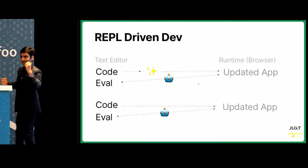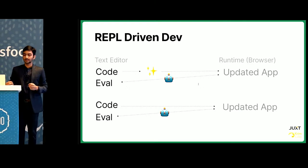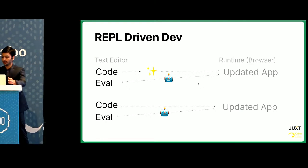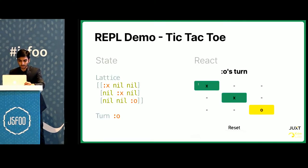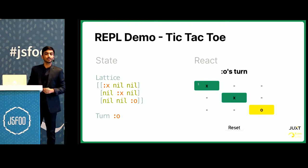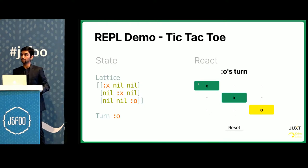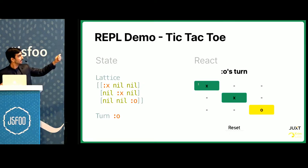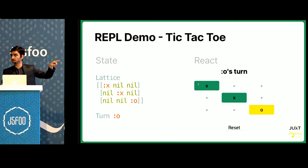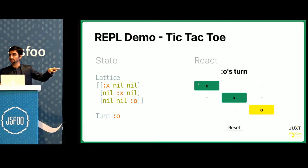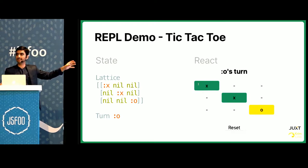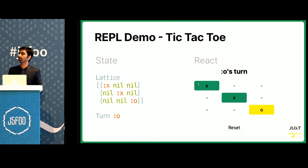A demo can explain this better than my words can. We've built a small tic-tac-toe application which has two pieces of state: a matrix that maintains who has marked what position, and a state that manages whose turn it is. There's a React component that takes this state, renders it, and gives you methods to interact with it.